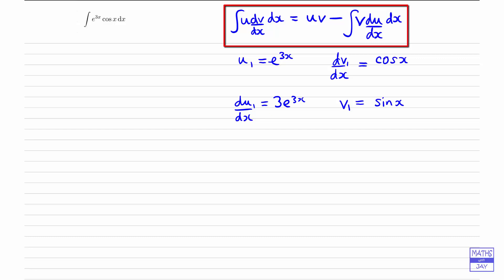Should we just give the integral a name? Let's call it i, and then it will be easier to see what we're doing. So using the formula, we are going to be multiplying u and v together. So u1 and v1 multiply together, give us e to the 3x times sinx. And then we're going to be subtracting the integral of v1 times du1 by dx. So that's going to be sinx multiplied by 3e to the 3x.